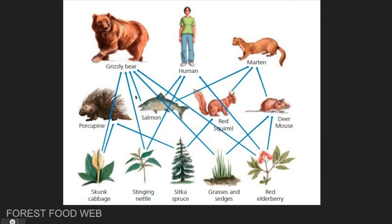So when we look at food webs, it's very important to pay close attention to the arrows so that we can know what organism is eating what. Also pay attention to what they eat, so we know how to identify the type of consumer. That is the end of our lesson for today, but before I go, I want to show you where you can find your test scores on Google Classroom.